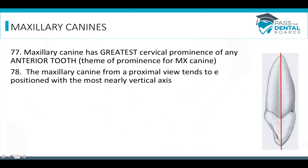If you come here to the cervical area, you can see it's quite prominent right here. There's this large bump as it slopes downward, but it's very prominent in the cervical area. The maxillary canine, when viewed from the proximal, tends to be positioned with the most nearly vertical axis. So it's a very straight tooth — from the cusp tip to the root tip, a very straight axis.